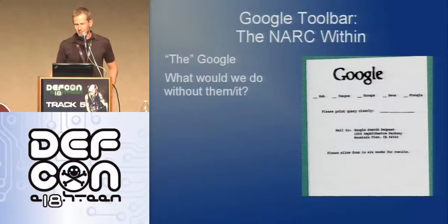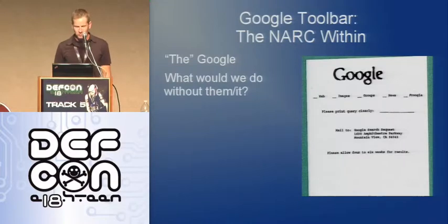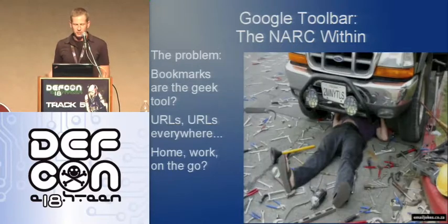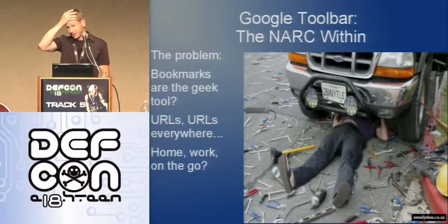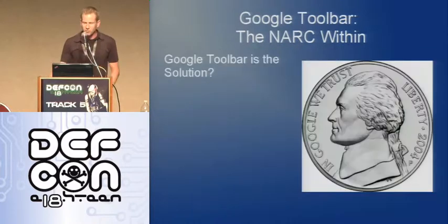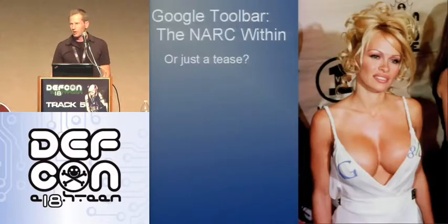What would we ever do without Google? What did we do before we had Google? The Google toolbar specifically — what problem does this thing solve for us? So if you're a geek, if you've got a computer in front of you, you probably have a million bookmarks — a million at home, a million at work, and they're everywhere on the go. So Google toolbar sure seems like the solution, right? Or, as we're going to talk about here, is it really just a tease?